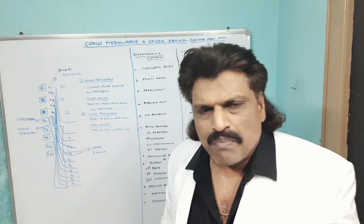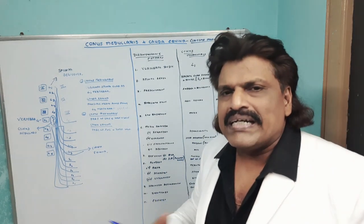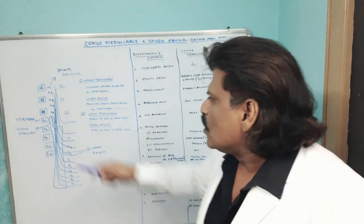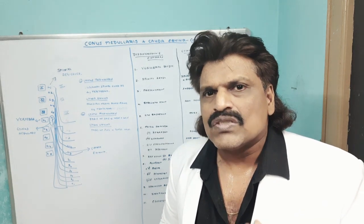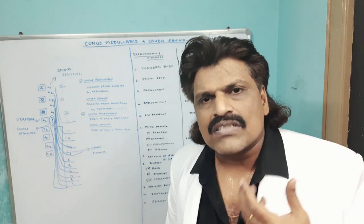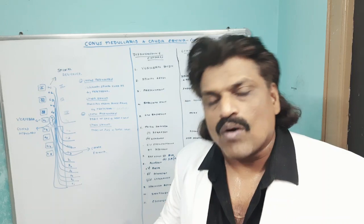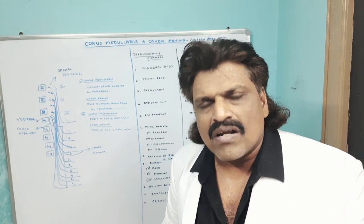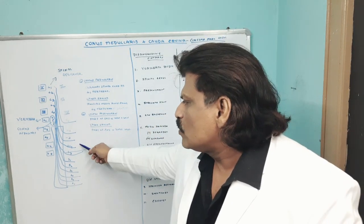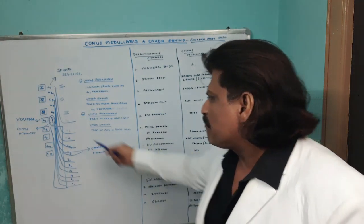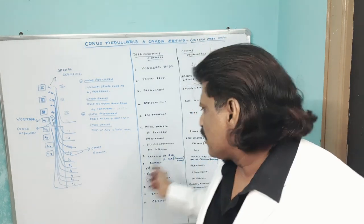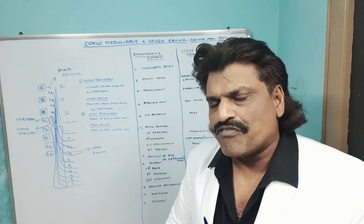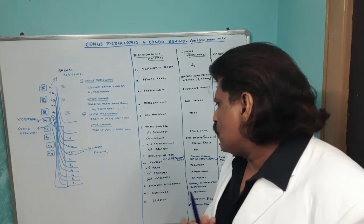Regarding the motor system: conus medullaris is symmetrical in presentation whereas cauda equina is asymmetrical. When it comes to weakness, conus medullaris is UMN type so the weakness is less marked, whereas cauda equina is lower motor neuron type so the weakness is more pronounced. Regarding fasciculations: since conus medullaris is spinal cord, the anterior horn cells may get involved so there may be fasciculations, but in cauda equina there are usually no fasciculations. Regarding atrophy: in conus medullaris there may not be much atrophy, but in cauda equina since the roots are involved there may be severe atrophy.